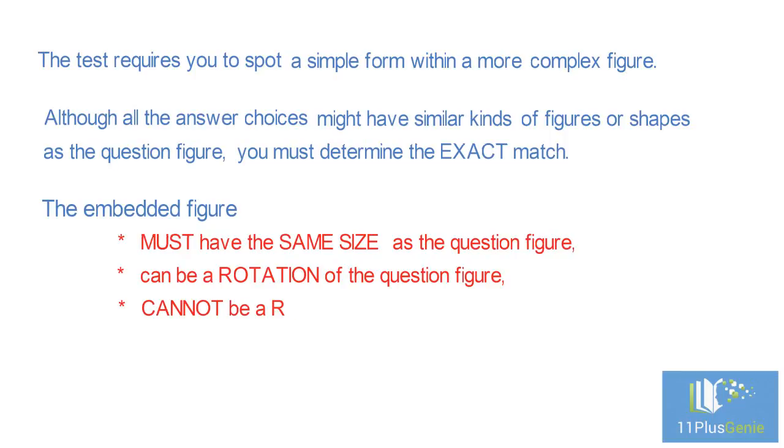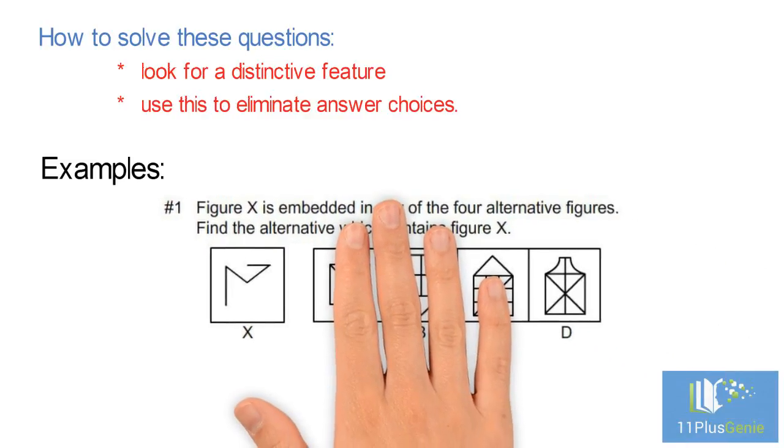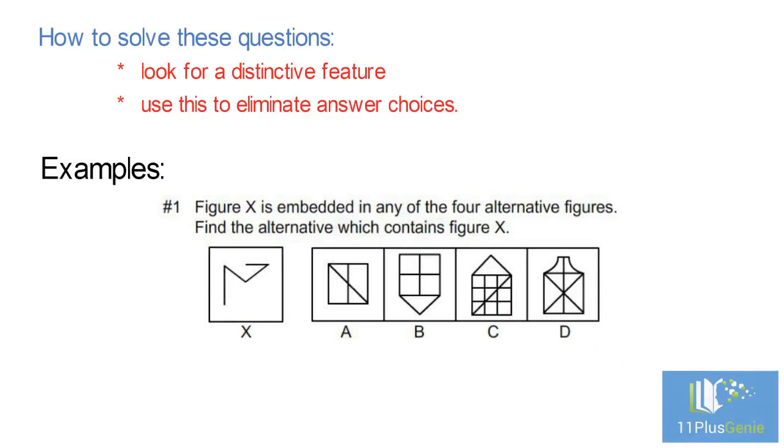it cannot be a reflection. How to solve these questions: look for a distinctive feature and use this to eliminate answer choices. Example #1: Figure X is embedded in any of the four alternative figures. Find the alternative which contains figure X.